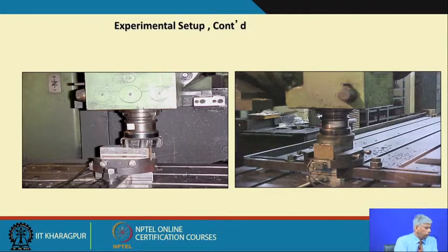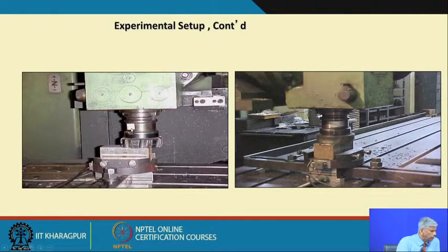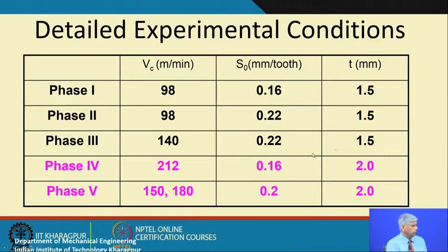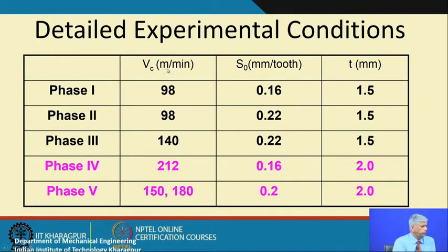A close-up view of the spindle shows where we mounted the accelerometer on the cutting tool. There is a cutting tool force dynamometer onto which the work piece is set, and we measured all the parameters. There are different phases with different feed rate, depth of cut, and speed values.